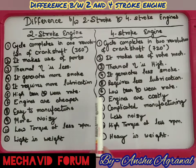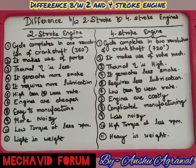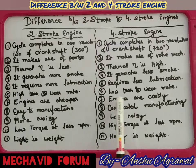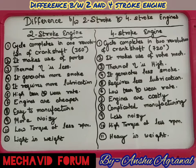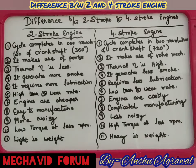Two-stroke engines are cheaper, whereas four-stroke engines are costly. Two-stroke engines use fewer parts — for example, ports are simpler to operate and require fewer attachments, reducing cost. Four-stroke engines use many more components like a camshaft to operate the valve mechanism, along with pinions, gears, tappets, springs, a flywheel, and many other attachments, all of which increase the overall cost.